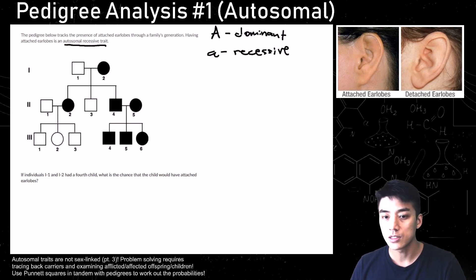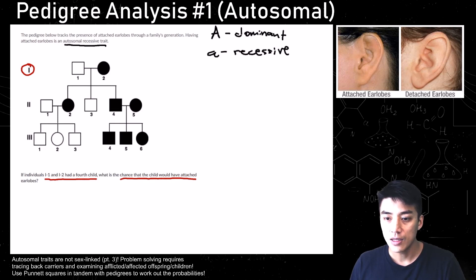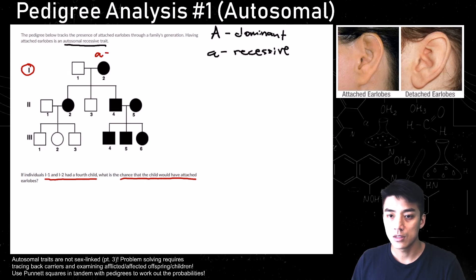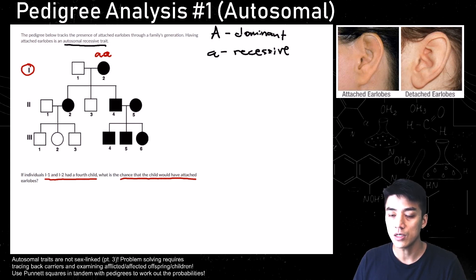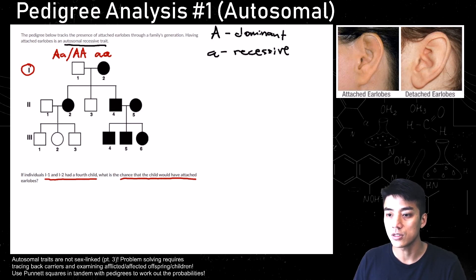Reading through the problem: if individuals 1,1 and 1,2 had a fourth child, what is the chance that child would have attached earlobes? We're going to look at generation one and figure out what that fourth child's potential trait might be. The mom is definitely little a, little a, because she is affected and it's autosomal recessive. The father, on the other hand, could either be heterozygous dominant or homozygous dominant — we don't know for sure until we do some Punnett squares.